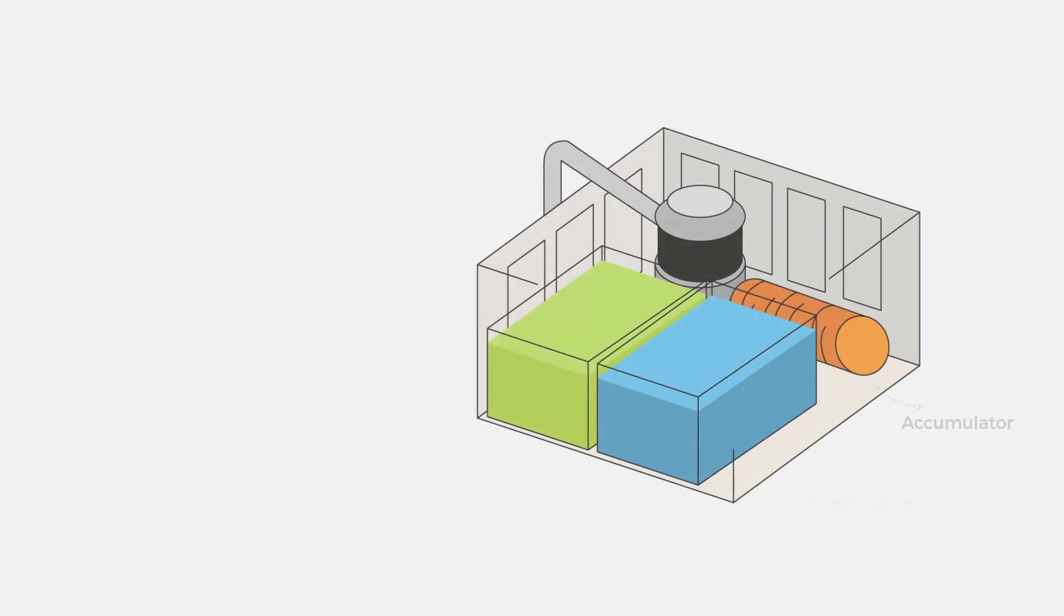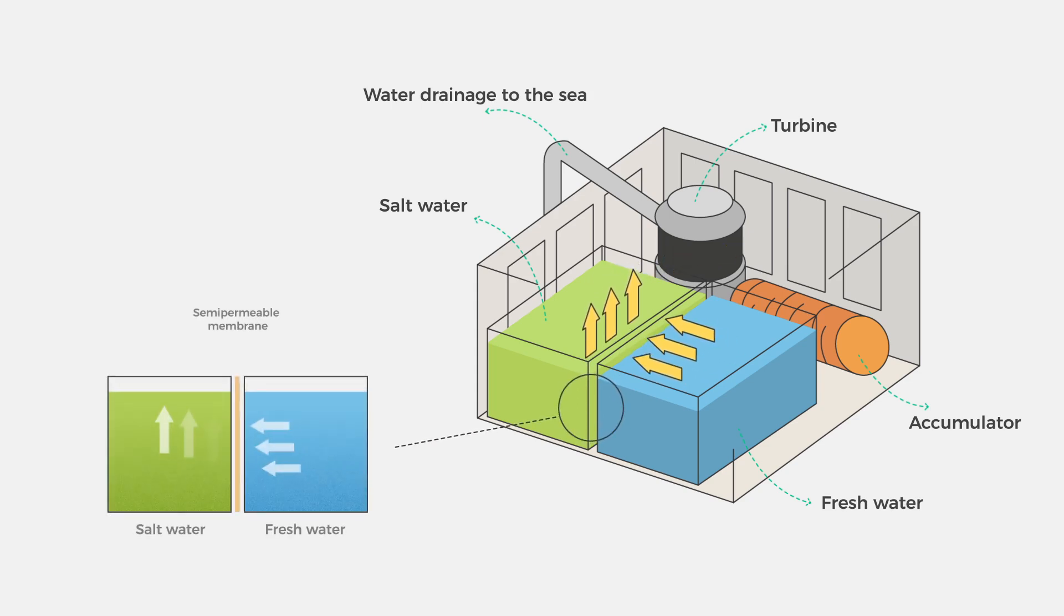This technology uses the pressure generated by osmosis to move electric turbines. When we have salt water and fresh water separated by a semi-permeable membrane, fresh water flows naturally towards the salt water chamber to lower the salt concentration. If the volume remains constant, pressure will increase,